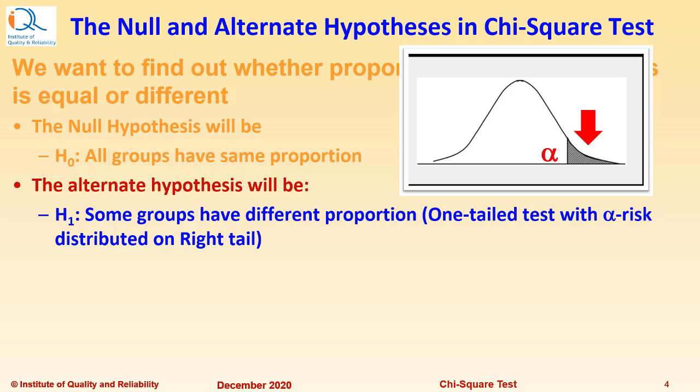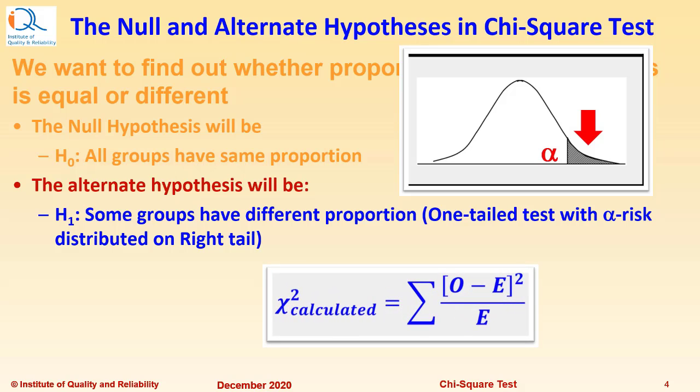This would be a one tail test with alpha-risk distributed on right tail. Remember, in this particular case, we will always look at the right tail value of the Chi-square distribution. The reason is that whenever the groups are different, the Chi-square value tends to get larger and larger.